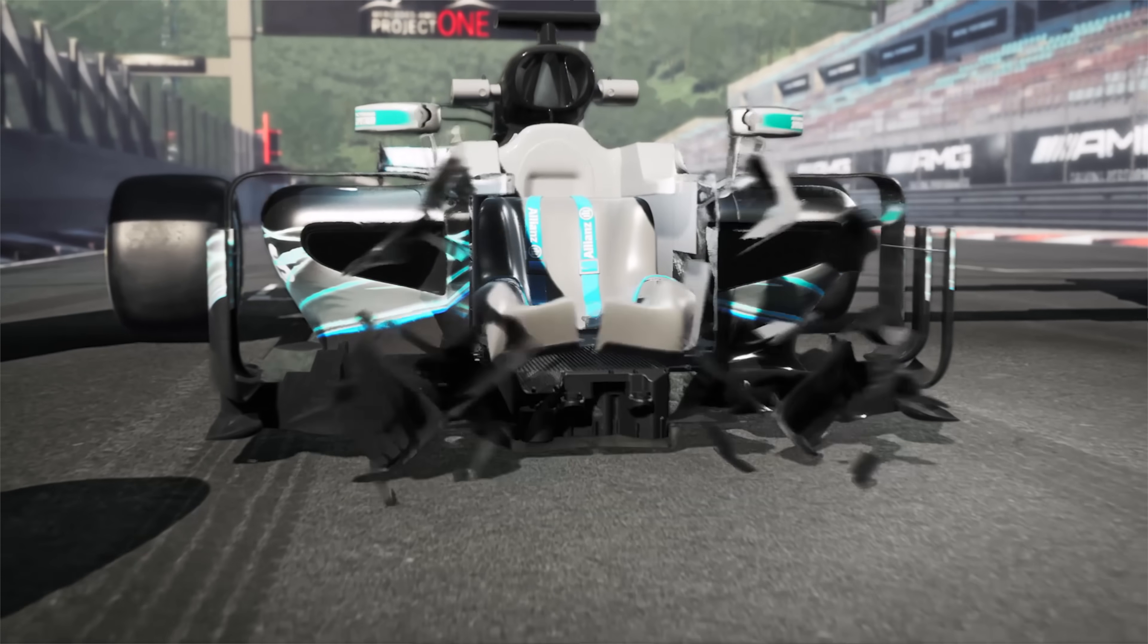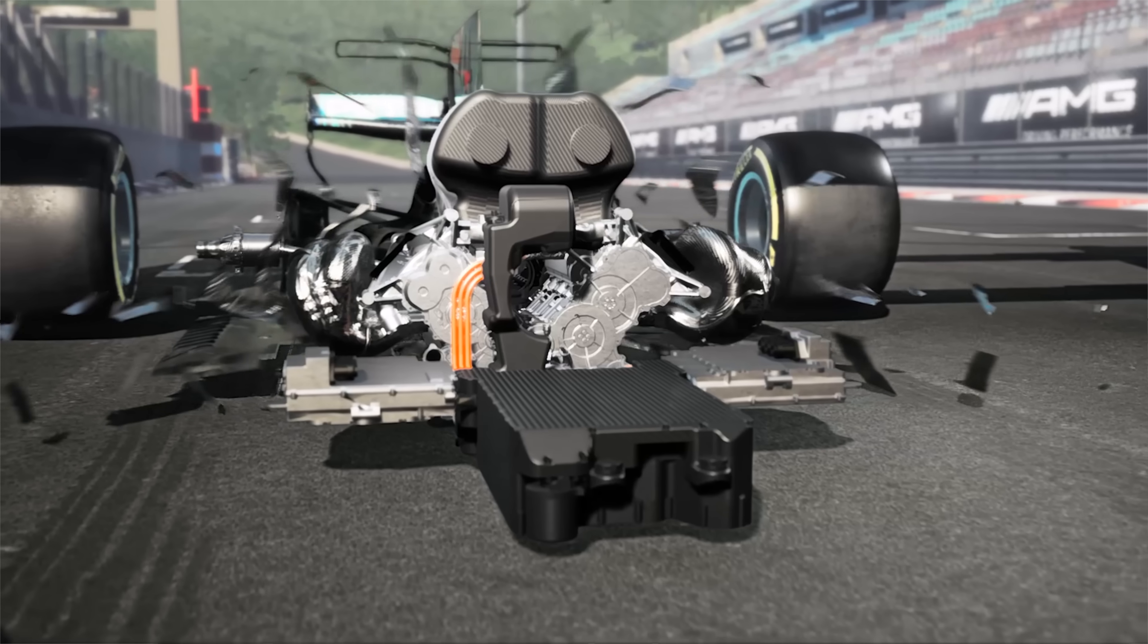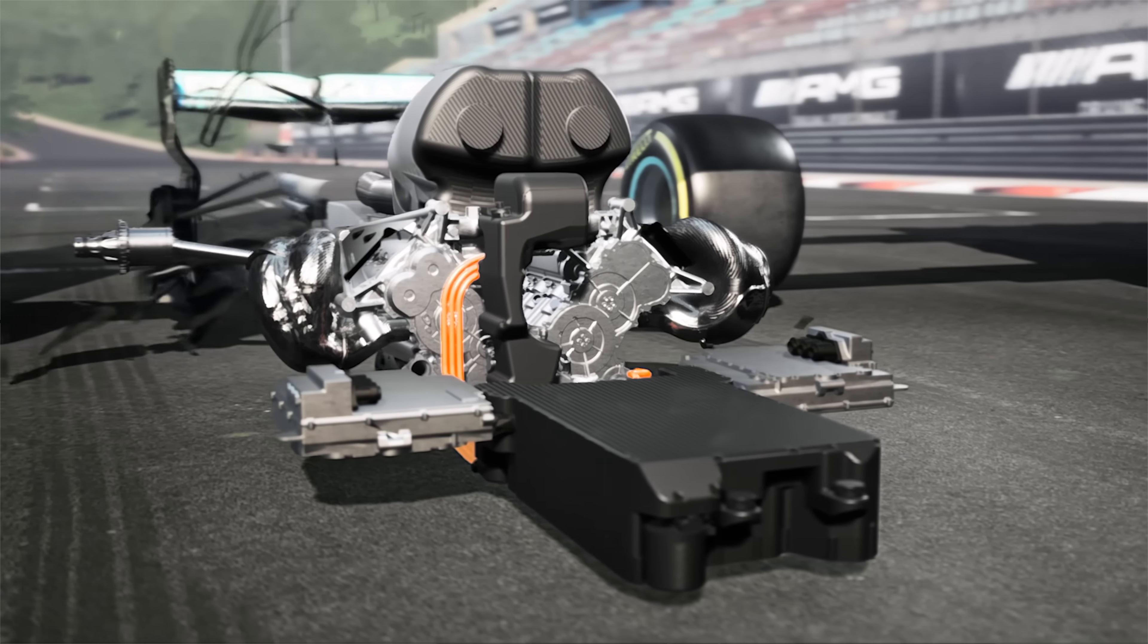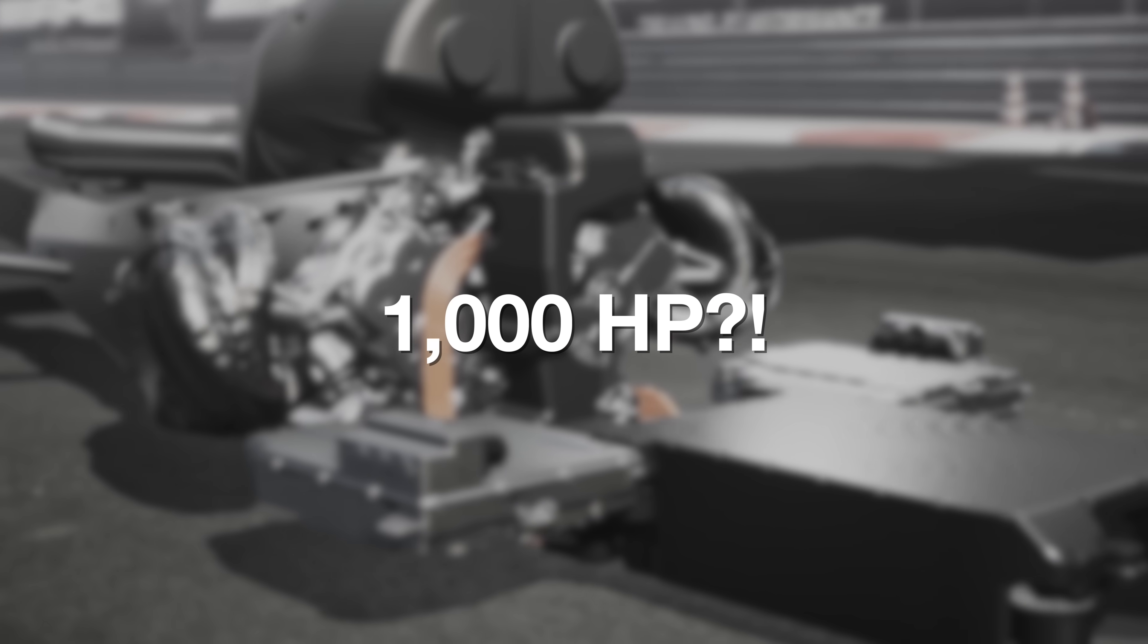Hello everyone and welcome. In this video we're going to be explaining how the tiny engines used in Formula One are capable of producing 1,000 horsepower.